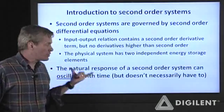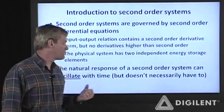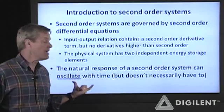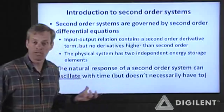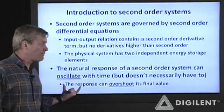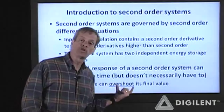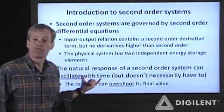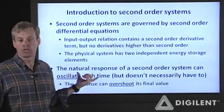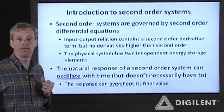One very interesting result of this type of arrangement is that the natural response of a second order system can oscillate with time. It won't necessarily oscillate under all circumstances, but it can. Therefore, if you have a natural response of a second order system, it can overshoot the final value that it gets to. First order systems always exponentially and smoothly approach their final value. Second order systems can overshoot those final values.